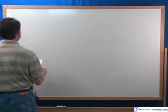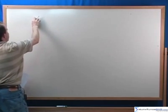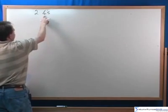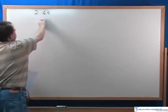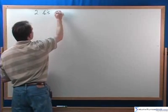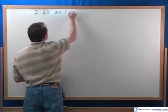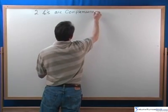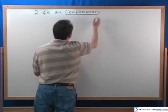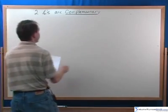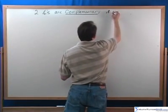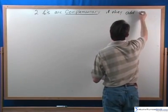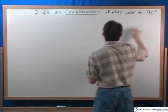First thing we're going to do is say, as a statement of fact, a definition, that two angles, and this is exactly how you'll see it written in a textbook, so I'm writing down with these abbreviations. Two angles are complementary. I'm going to underline that because that's the term that we're trying to learn here. Two angles are complementary if they add up to 90 degrees. That's all it means.